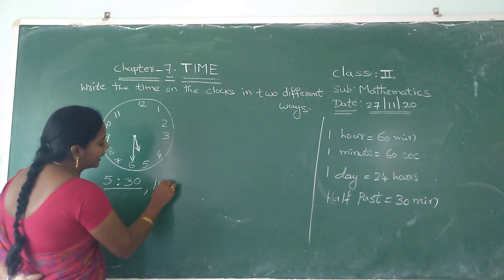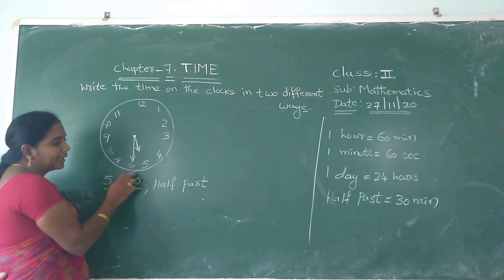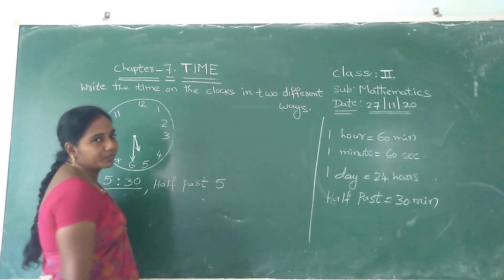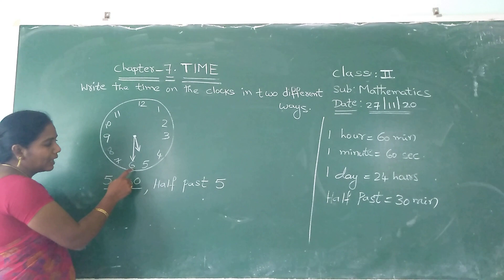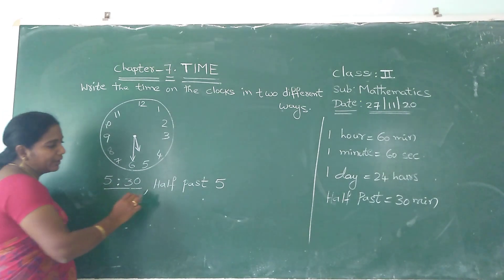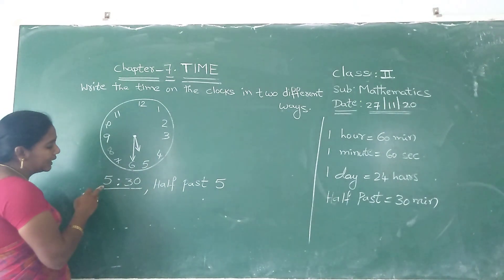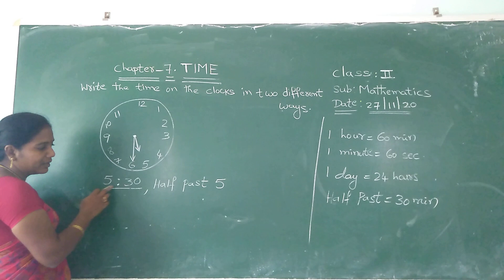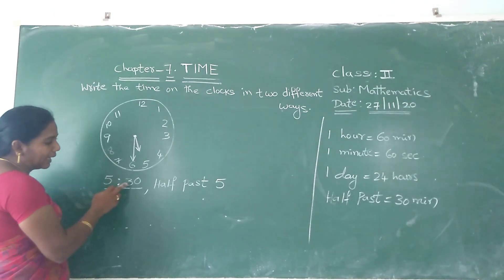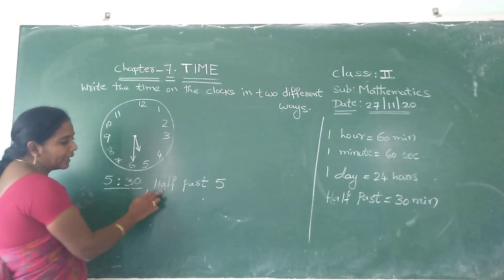30 minutes means what do you have to write? Half past. How many minutes is half past? 30 minutes means half means 30. So write: half past 5. Whenever you are writing in spelling, you have to write minutes first, then hours. Whenever you are writing in numbers, you have to write hours first, then minutes.